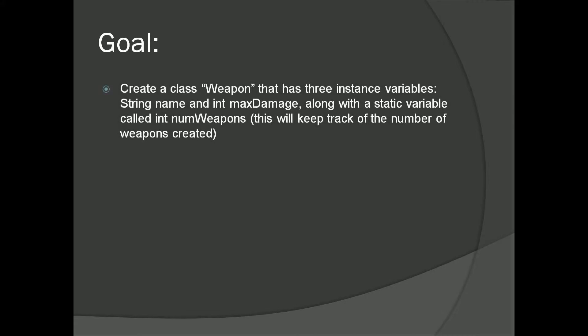Alright, so your goal: you're going to create a class called Weapon — getting into video games — that has three instance variables. String name and int maxDamage. Make these protected, because this is going to be a parent class. Also create a static variable called int numWeapons. You can make this variable public, or make it private with getters and setters, but just make sure you make it static, because this is going to keep track of the number of weapons created in total.